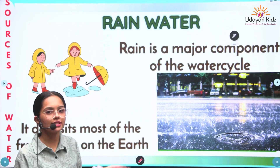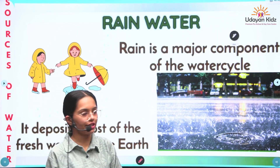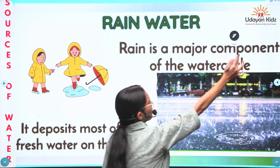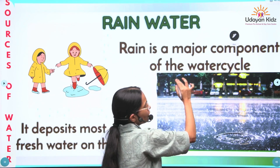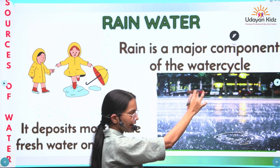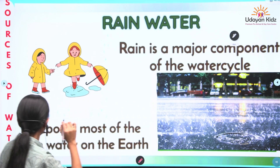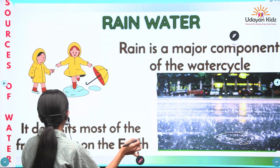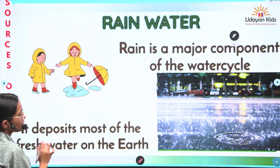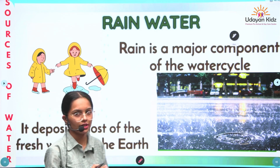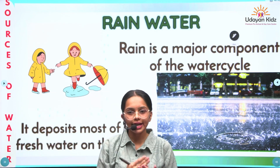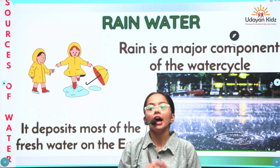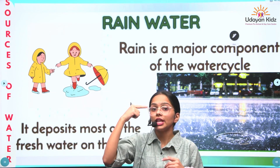First one is rain water. Rain is a major component of the water cycle. It deposits most of the fresh water on the earth. Rain is the water that falls from the cloud on the ground.